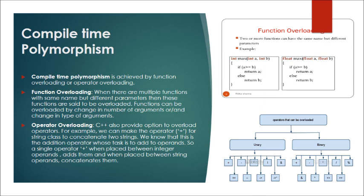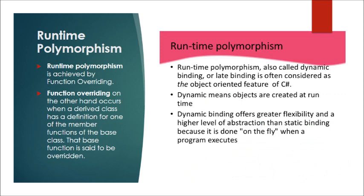Operator overloading: C++ also provides the option to overload operators. For example, we can make the operator plus for the string class to concatenate two strings. We know that this is the addition operator whose task is to add two operands. So a single operator plus, when placed between integer operands, adds them, and when placed between string operands, concatenates them.